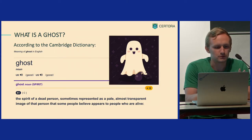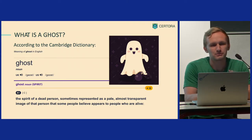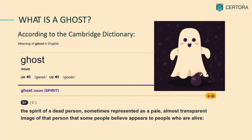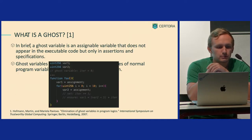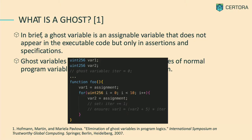What in general do we think about ghosts when we hear this word? Usually it's just like the spirit of a dead person, sometimes represented as a veil that comes to alive people. Usually it looks like this cute ghost on the picture, but we are just scientists and we don't believe in this type of ghost, so we need a more scientific approach. And it already exists in computer science. For example, you can read the article 'Elimination of Ghost Variables in Program Logics,' where people explain the notion of ghosts, and they also have an example with the Java Modeling Language.